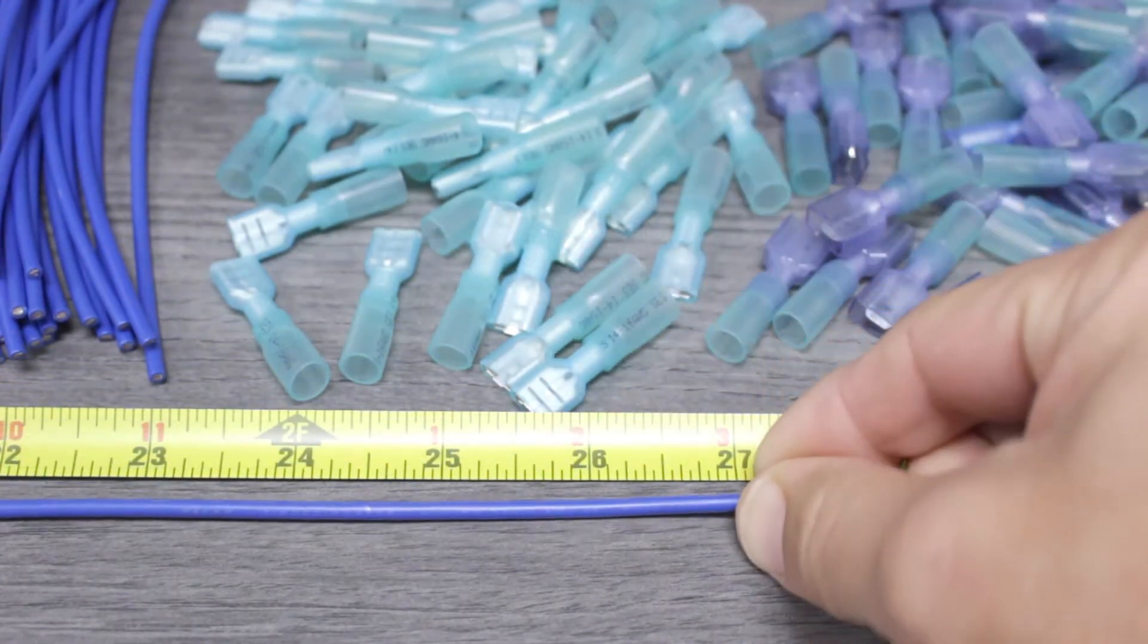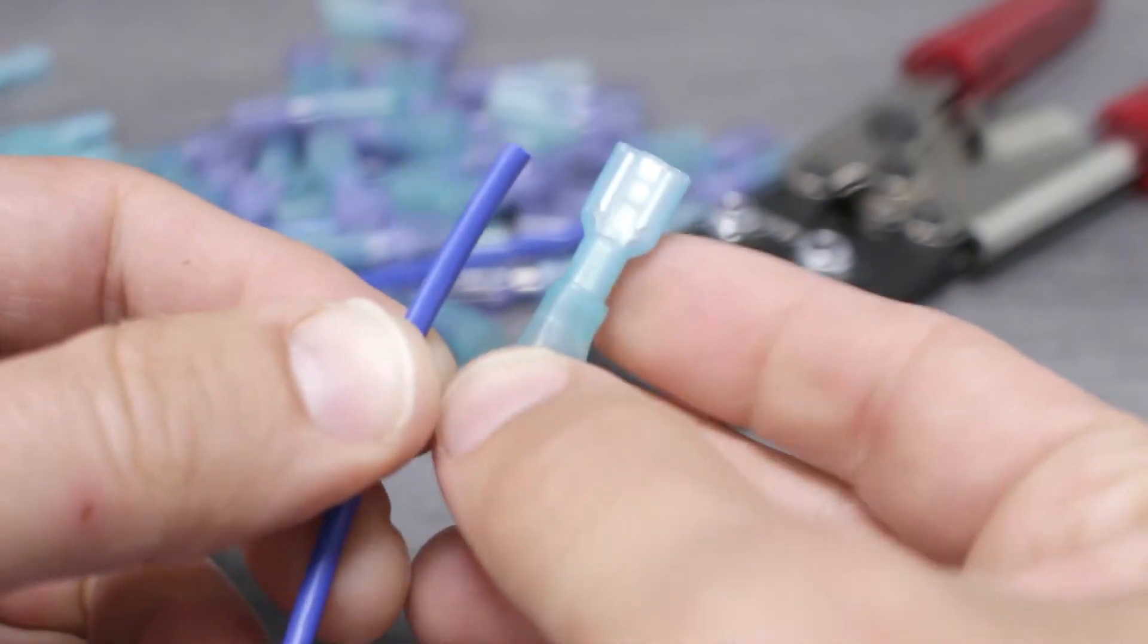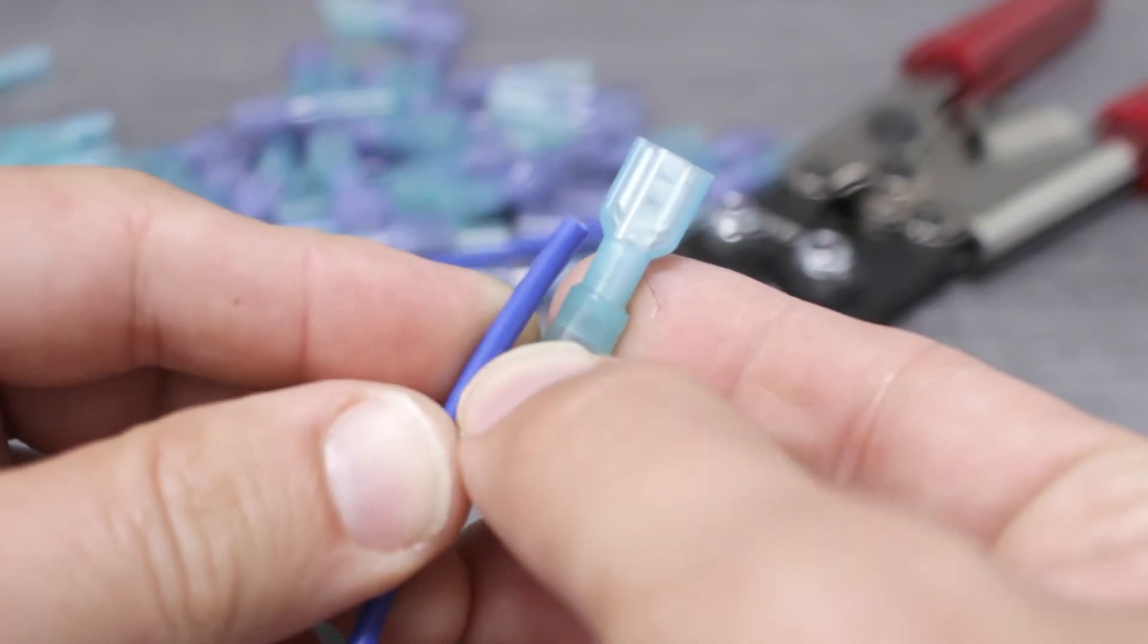The first step is to measure the wires to the proper length and then cut them using the compact wire stripper. Next, we'll remove the correct amount of insulation based on the depth of the terminal.